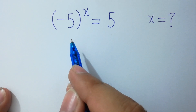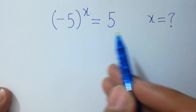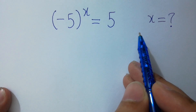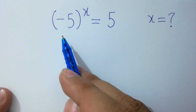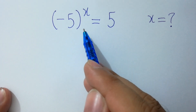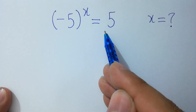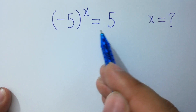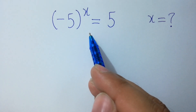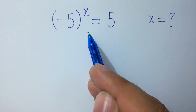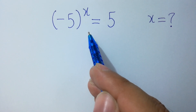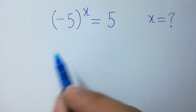Hello friends. Find the value of x if minus 5 to the whole power x equals 5. I am going to show this problem with two methods. The first method is common logarithms and the second is natural logarithms.